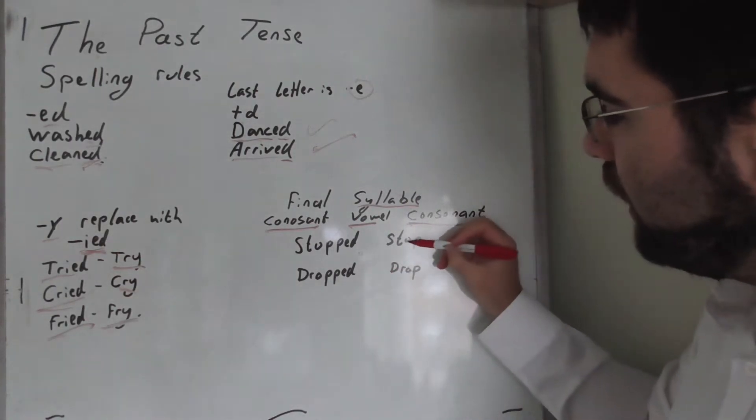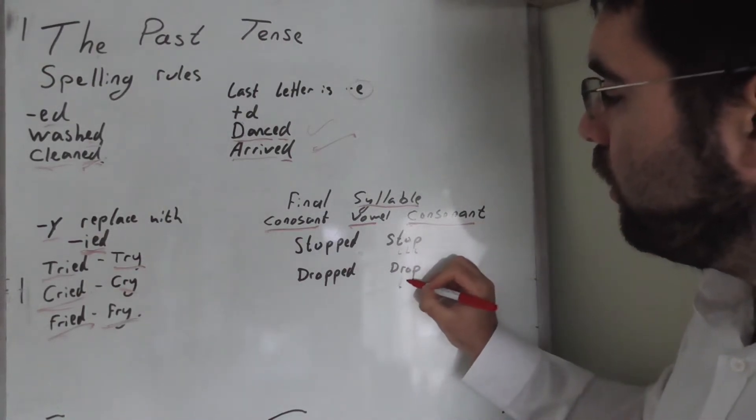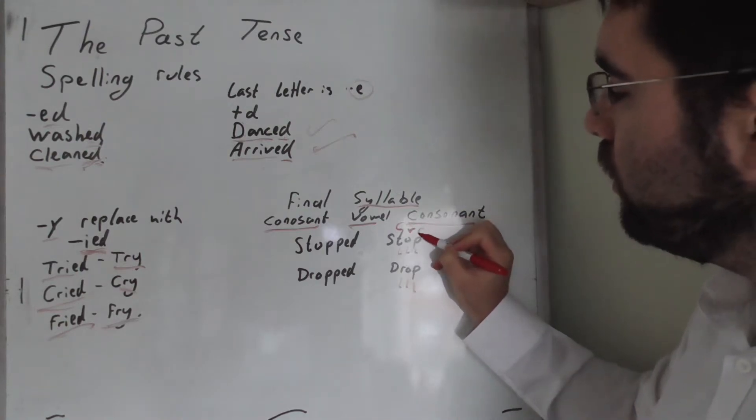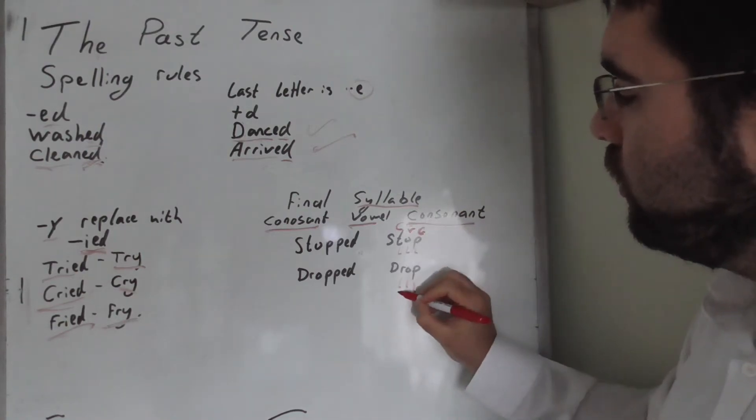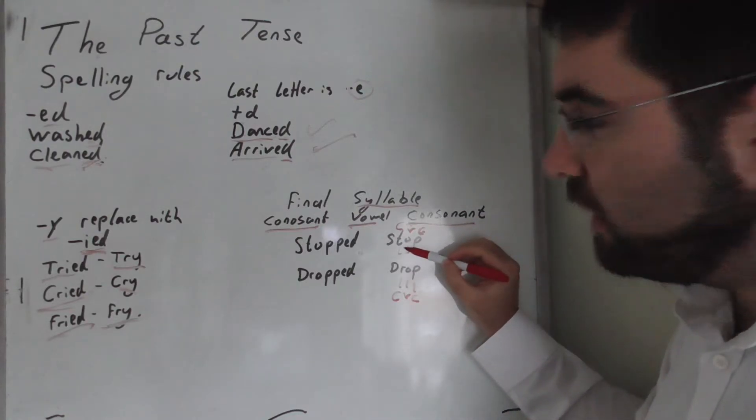Here we have T-O-P. Drop - R-O-P. It's consonant, vowel, consonant. The last three letters: T-O-P, R-O-P.